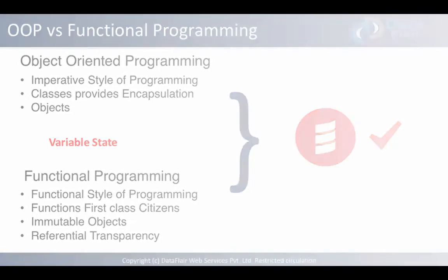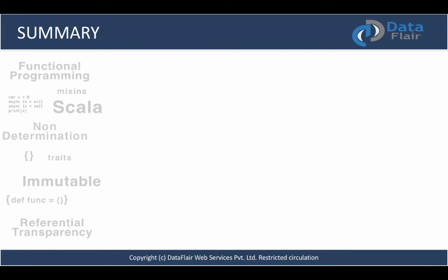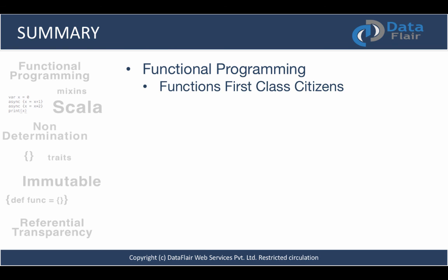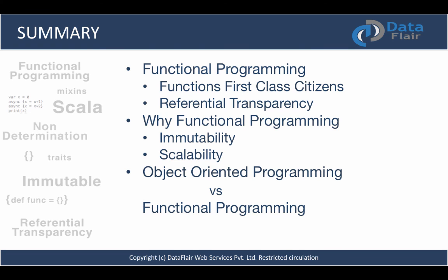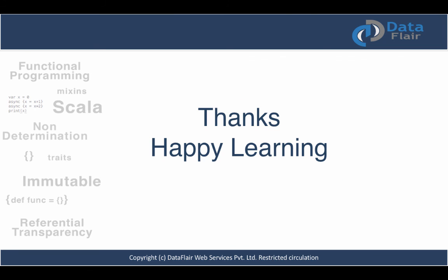That's it for this lecture. We started with functional programming — what it is and when it all started. We talked about functions as first-class citizens and referential transparency. We learned about why we would choose functional programming and related immutability to scalability. Then we covered functional programming versus object-oriented programming — how states can introduce complexities. I hope you enjoyed this lecture. See you in the next one — happy learning!